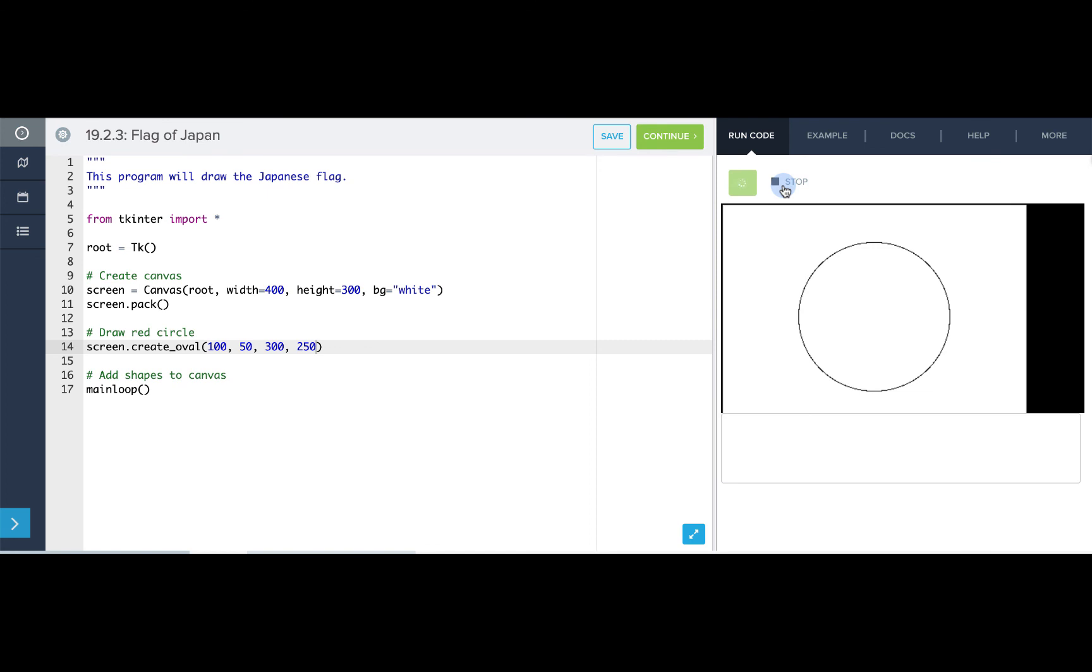Perfect. So we have our circle, but we need it to now be red. So I can use the fill attribute and type red. And now my circle turns red, but I can still see a little black line on the outside. So I have two options. I can use outline equals red, and I'll see that now my outline will be red. Or I can just leave outline blank, and that means no color will be added.